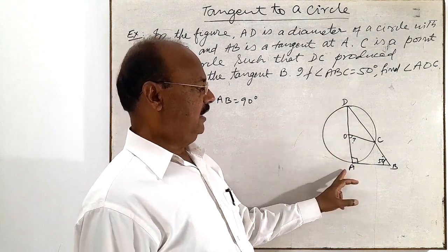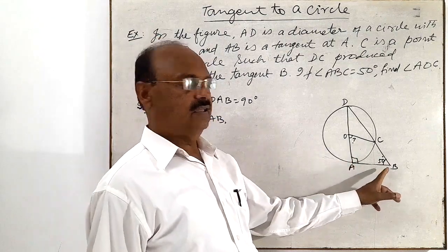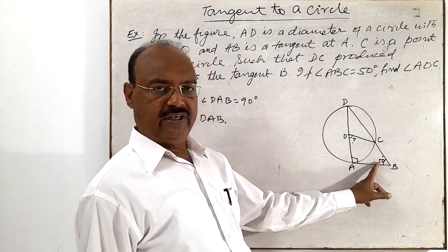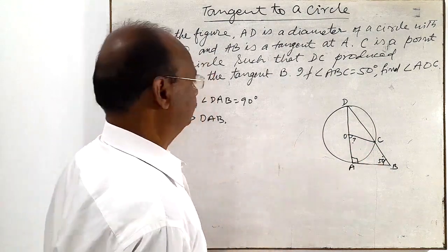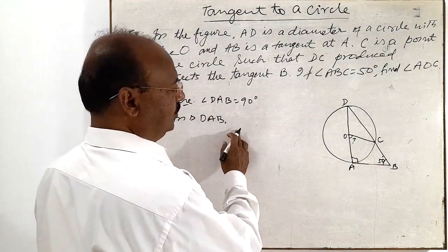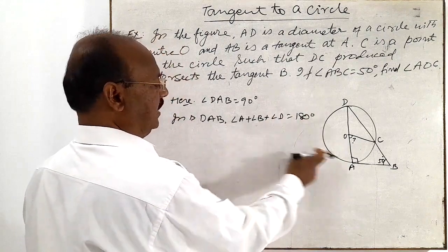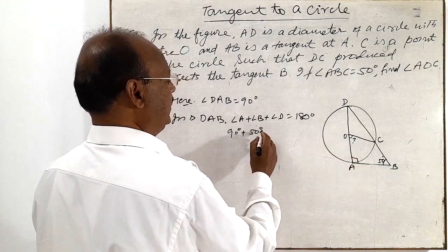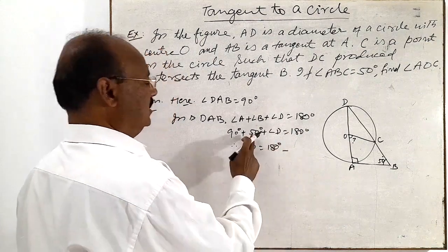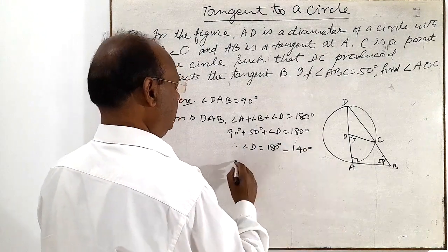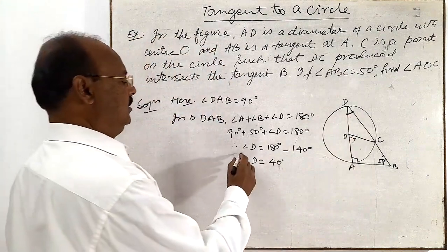Now in triangle DAB, we know the values of two angles: one angle is 90 degrees and another angle is 50 degrees. We can find angle D easily because the sum of three angles is 180 degrees. So angle A plus angle B plus angle D equals 180 degrees. With angle A = 90° and angle B = 50°, we get angle D equal to 40 degrees.